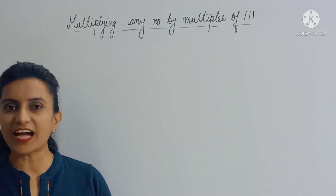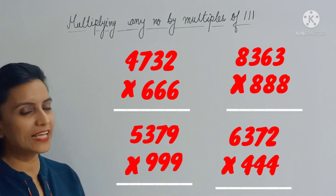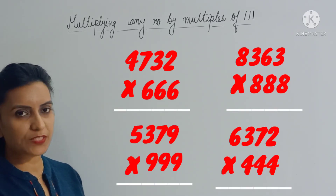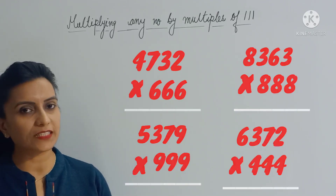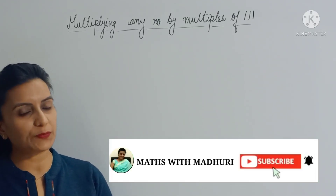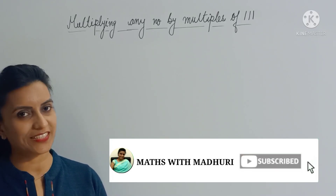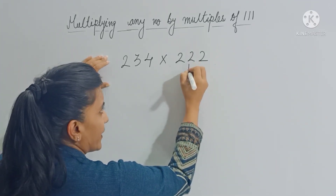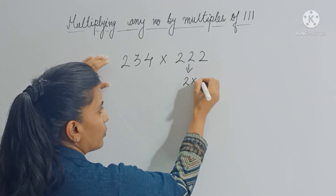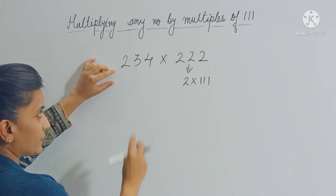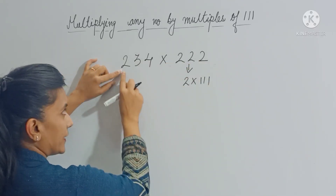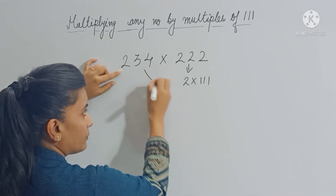Hello everyone, let's learn how to multiply such numbers in just a few seconds. If you have noticed, all these numbers are multiples of 111. We are going to learn how to multiply any number by multiples of 111. Let's get started — let's multiply 234 by 222. We can write 222 as 2 × 111, so instead of multiplying 234 by 222, we will multiply 234 by 2 first, and then multiply that product by 111.